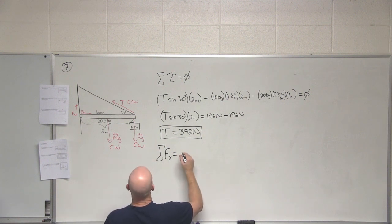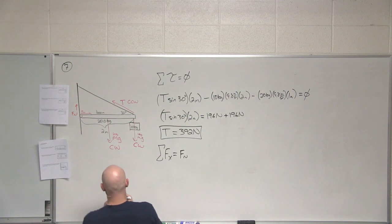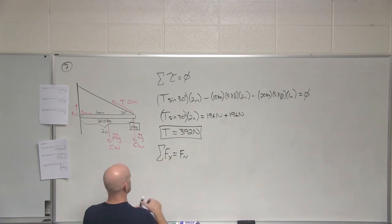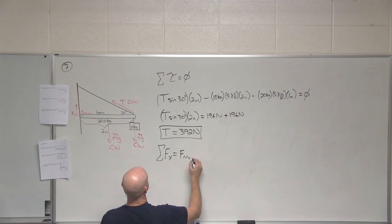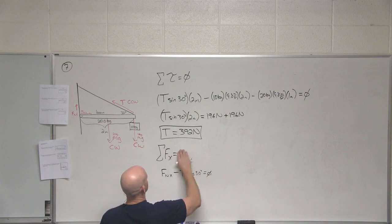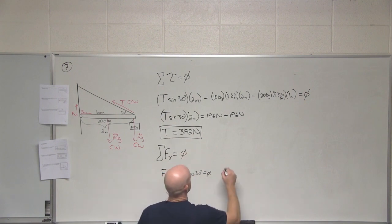So if you want to do that, we'd set up the sum of the force equations. Sum of the force in the x direction, what forces are acting in the x direction? The normal force, so yeah, let's call this F normal x and F normal y. So we got F normal x points to the right and minus the T component, which would be adjacent. Good, T cosine 30, and that will equal zero.